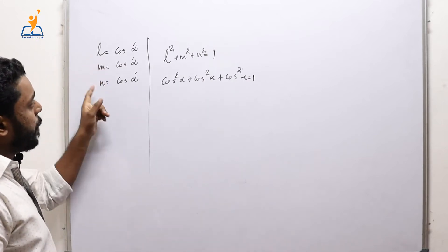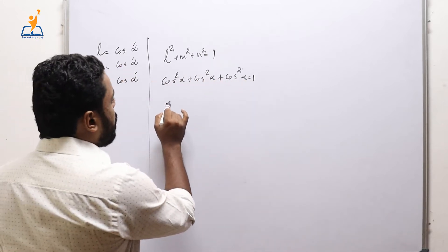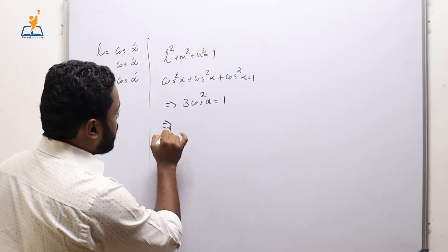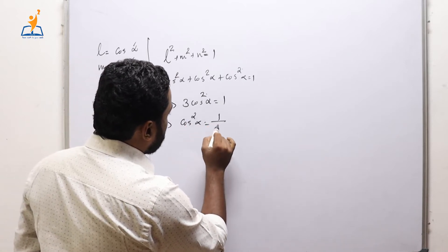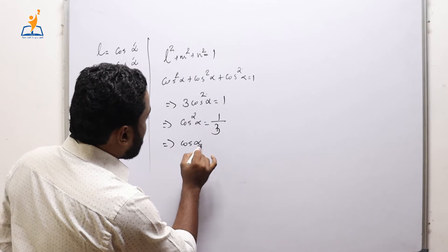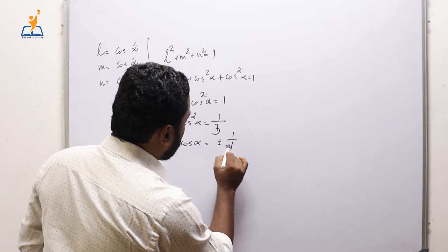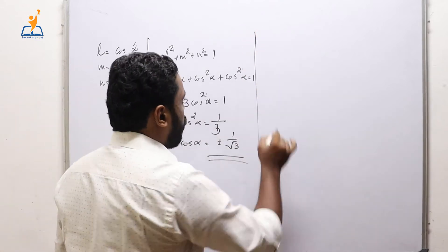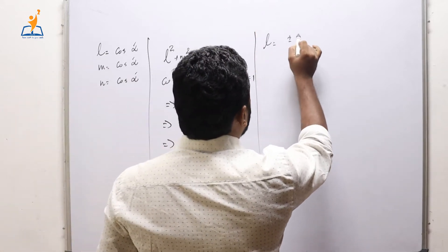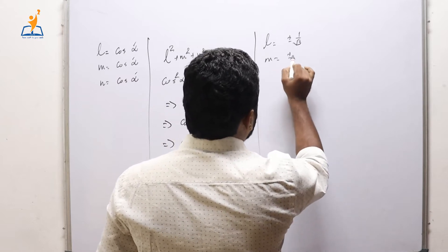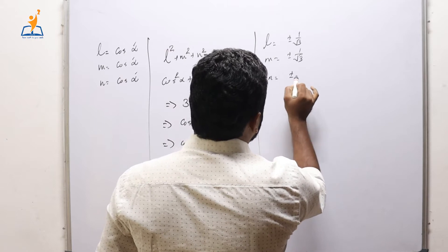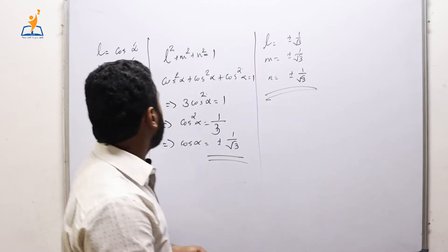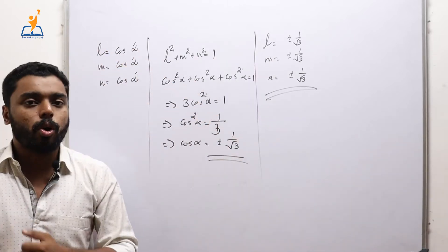Since L, M, and N are respectively cos α, cos α, cos α, using the identity L² + M² + N² = 1, we get 3 cos² α = 1, which implies cos² α = 1/3, so cos α = ±1/√3. Therefore the direction cosines are L = ±1/√3, M = ±1/√3, N = ±1/√3 for the line which makes equal angles with the coordinate axes.